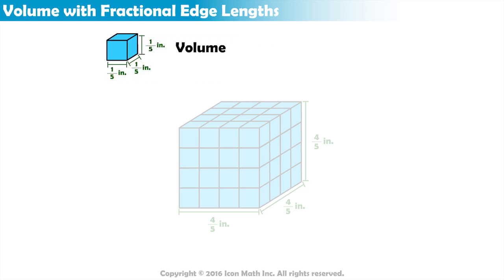To find the volume of this tiny cube, we can multiply these three dimensions. 1/5th times 1/5th times 1/5th equals 1 over 125. The volume of this cube is therefore 1 over 125 inches cubed.